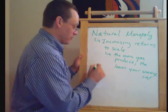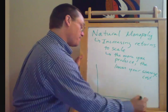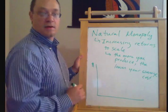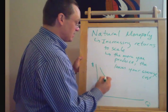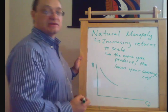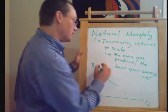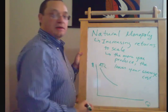In terms of a diagram, we can actually sort of draw this out. So if we're putting price here and quantity on this axis, to say that we have increasing returns to scale means that the average total cost curve is downward sloping.